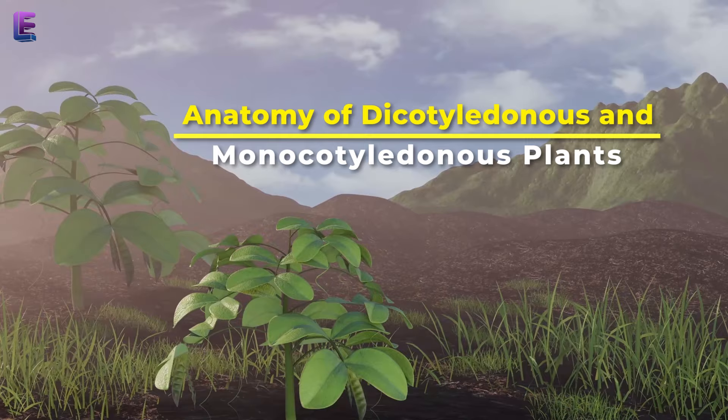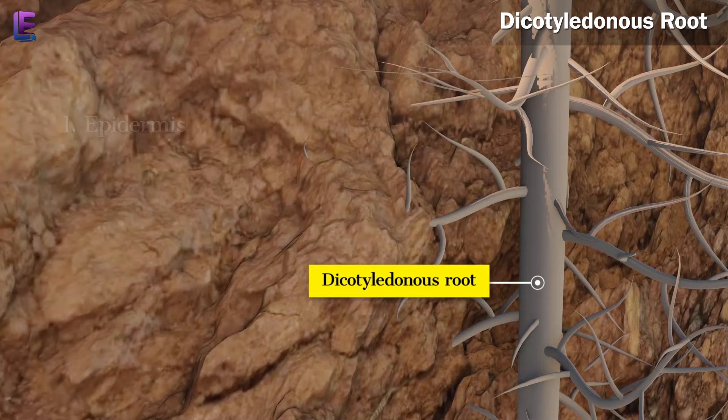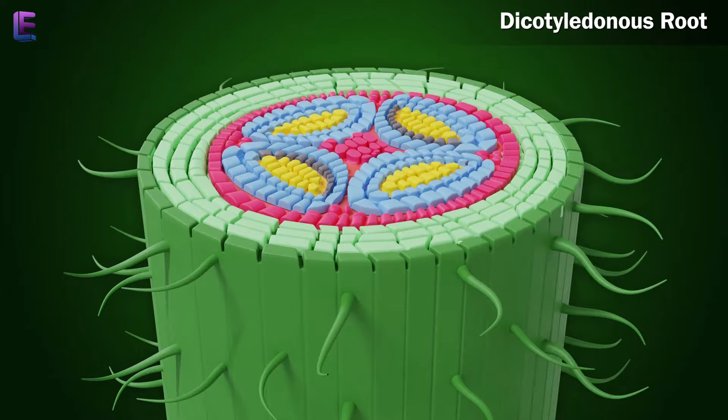Anatomy of Dicotyledonous and Monocotyledonous Plants. Dicotyledonous Root: There are three main parts of a dicotyledonous root. These are: 1. Epidermis, 2. Cortex, and 3. Stele.